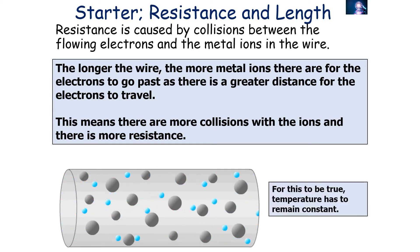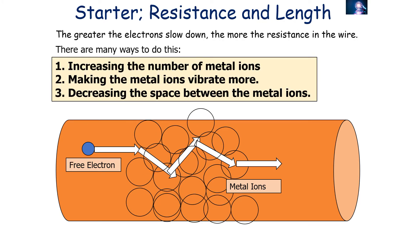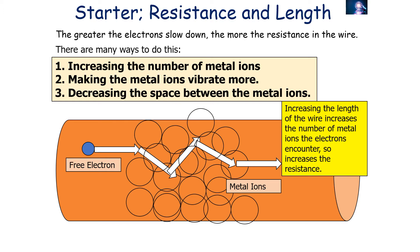This means there are more collisions with the ions and therefore more resistance. Remember, for this to be true the temperature of the wire must remain constant. Resistance is caused by collisions between the flowing electrons and the metal ions of the wire — the electrons slow down, which lowers the current. Increasing the length of the wire increases the number of metal ions the electrons encounter, and therefore increases the resistance.